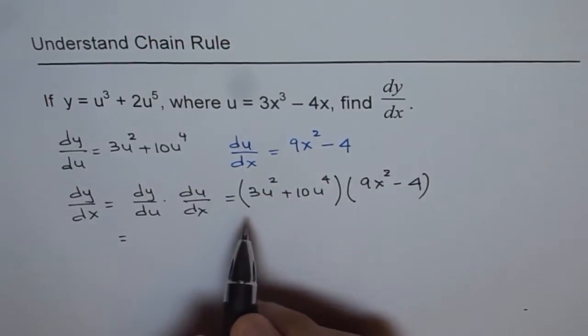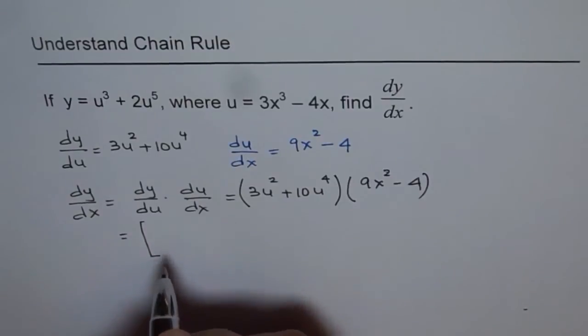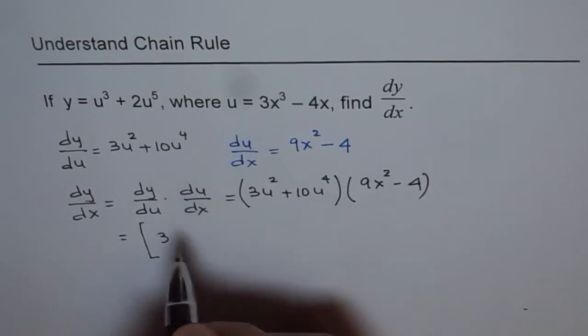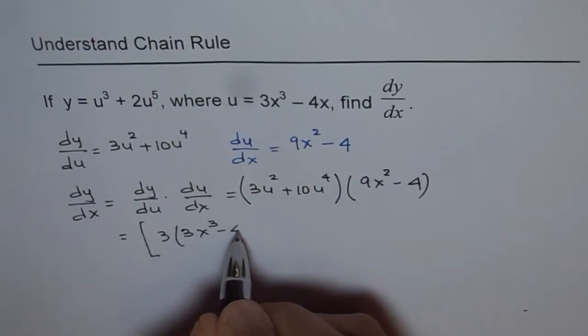This could be written as, let me use square brackets, 3 times, and u is 3x cubed minus 4x.